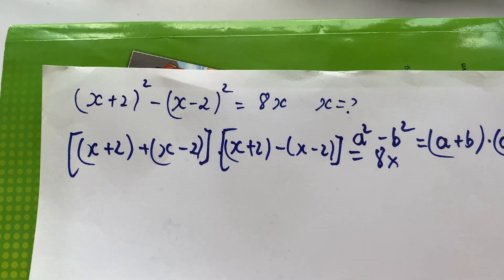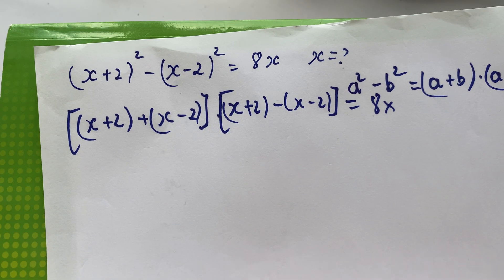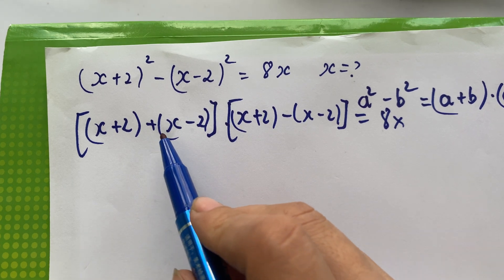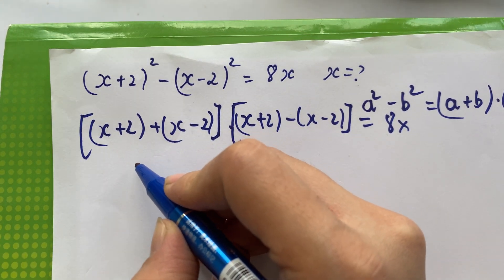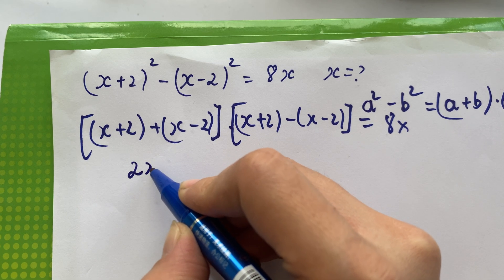And you see, (x+2) plus (x-2) equals 2x.